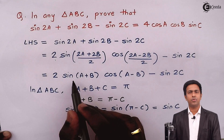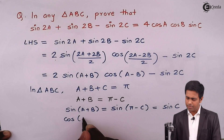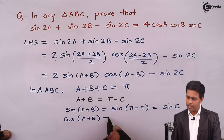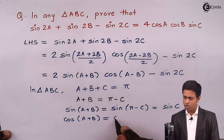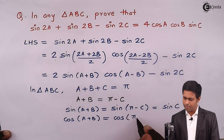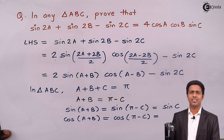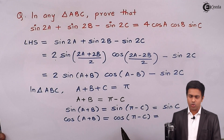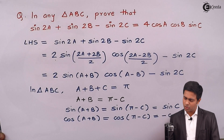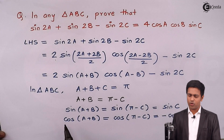We can now substitute this value. At the same time, let's find the value of cos(A plus B). Applying cosine on both sides of A plus B equals pi minus C gives cos(A plus B) equals cos(pi minus C). Since cos(pi minus C) equals minus cosC, we get the value: cos(A plus B) equals minus cosC.